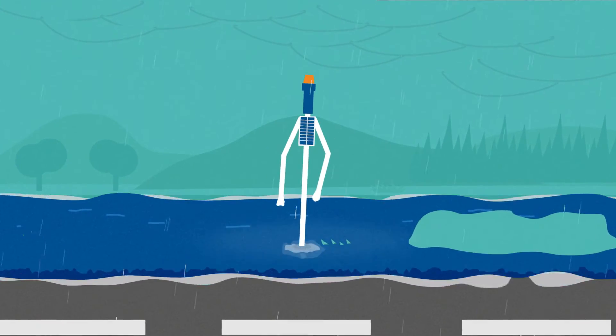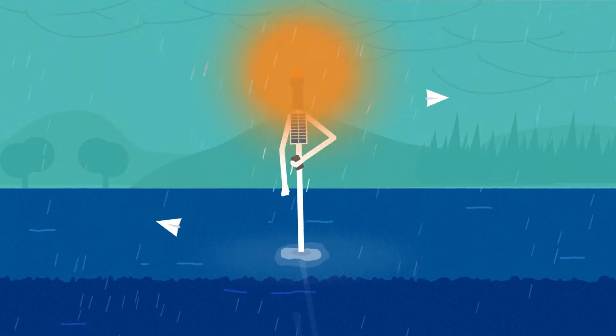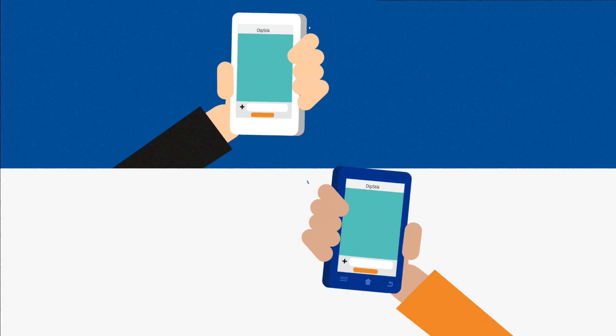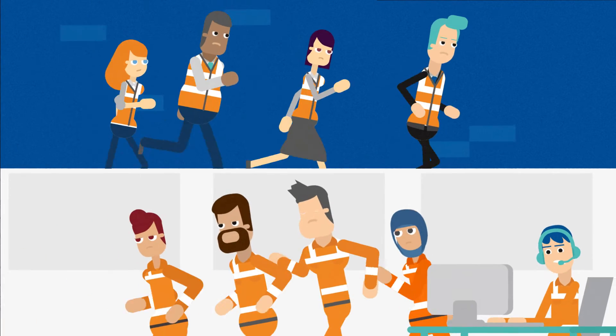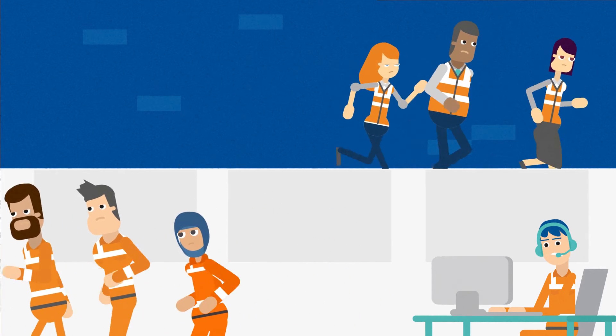As soon as water starts rising, the Dipstick device sends an SMS to the local council and the local NSW SES unit, giving them maximum time to prepare and respond to flood danger.